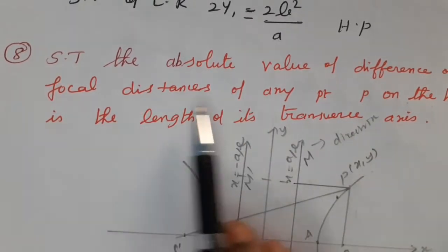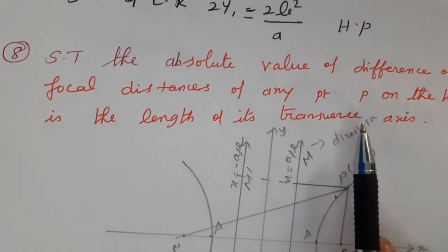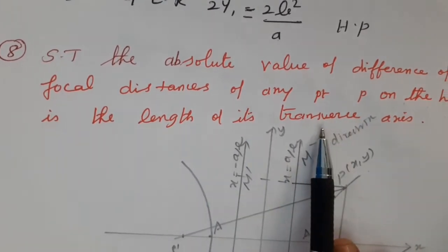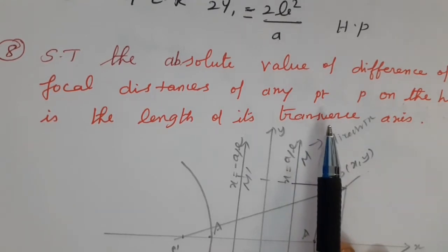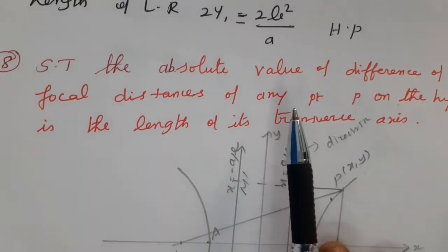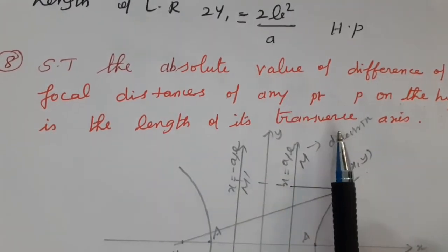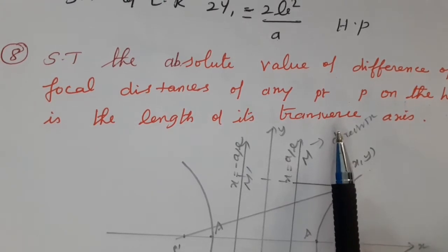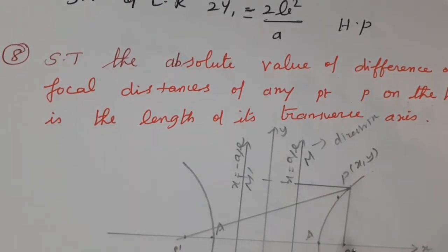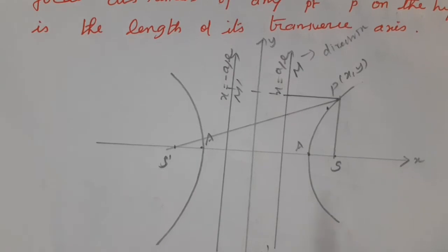The transverse axis has length 2a, and the conjugate axis has length 2b — these are already given in the notes. We are going to prove that the difference of the focal distances equals the length of the transverse axis, i.e., |S'P − SP| = 2a.